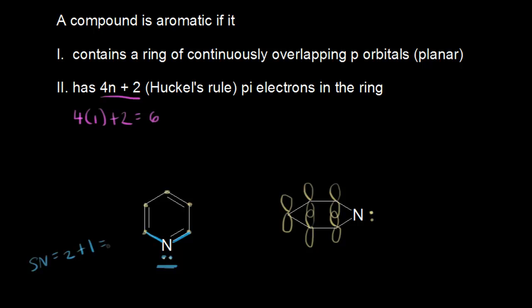The nitrogen also has one lone pair of electrons. So the steric number equals 2 sigma bonds plus 1 lone pair = 3. A steric number of 3 means three hybrid orbitals, so this nitrogen is sp2 hybridized, giving it one unhybridized p orbital. We can sketch in that p orbital. Counting the pi electrons in pyridine gives 2, 4, and 6 — fulfilling Hückel's rule. The p orbitals overlap side by side, the 6 pi electrons are delocalized throughout the ring, and pyridine is an aromatic molecule with extra stability.